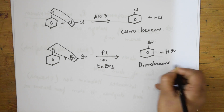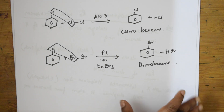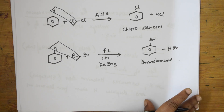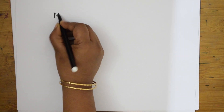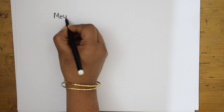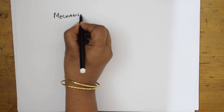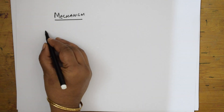I have already shown the electrophilic substitution mechanism in general. Now we will see the halogenation mechanism step by step. In step 1, instead of writing chlorine or bromine specifically, I will use X to represent the halogen.